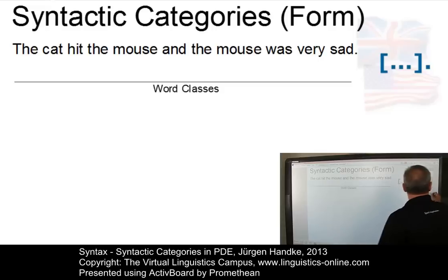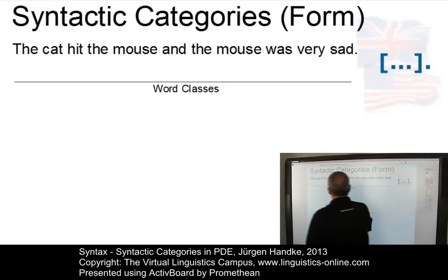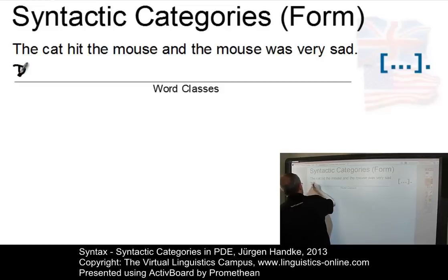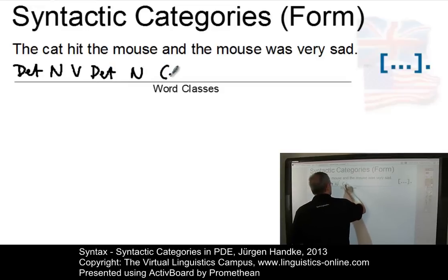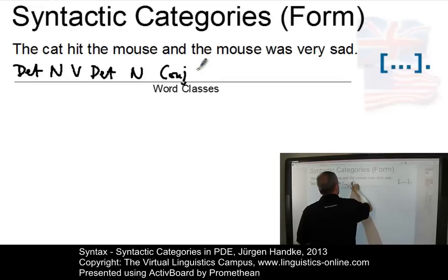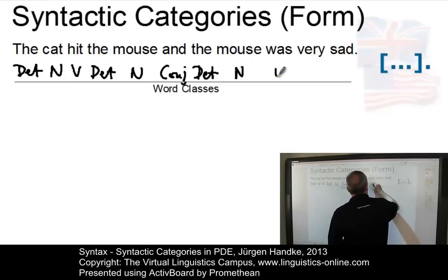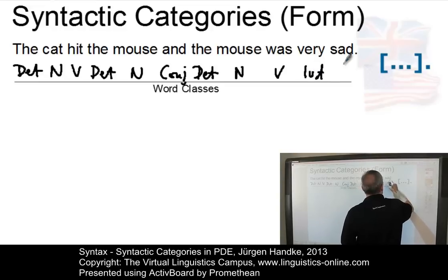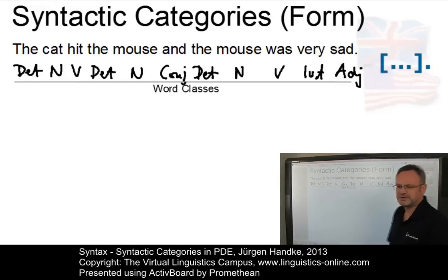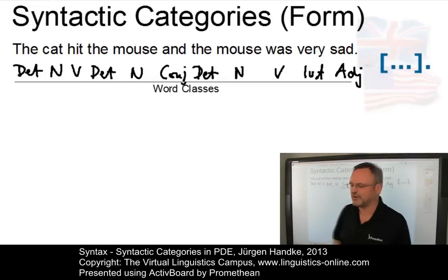First of all, let's look at the word classes. The is a determiner. Cat is a noun. Hit is a verb. Here we have another determiner. Mouse is a noun. Then we have a conjunction and we have another determiner. Mouse is a noun. Was in this particular context is a copular verb. Very is an intensifier, and sad is an adjective. So, this is some sort of preliminary analysis which we will come back to later on.